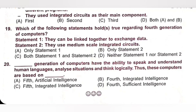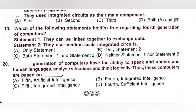Question 20 (Last): Dash generation of computers have the ability to speak and understand human languages, analyze situations and think logically. Thus these computers are based on — A. 5th generation, artificial intelligence, B. 4th integrated intelligence, C. 5th integrated intelligence, D. 4th sufficient intelligence. The 5th generation of computers have the ability to speak and understand human languages, analyze situations and think logically — these computers are based on artificial intelligence. Option A is the correct answer. Thank you, dear kids, for watching this video. If you like this video, please like and subscribe. For any suggestion or comment, please mail at easylearnfunnylearn@gmail.com.